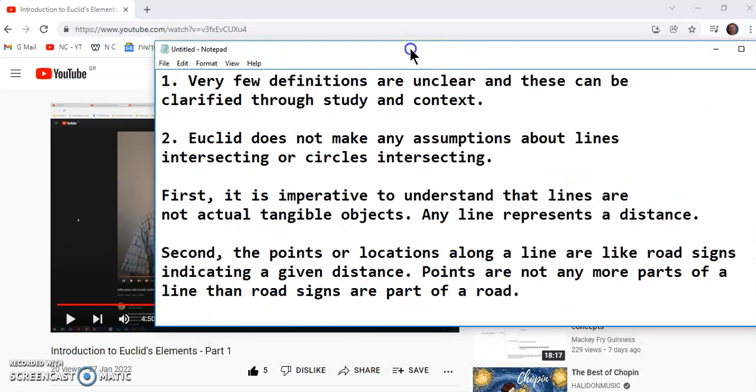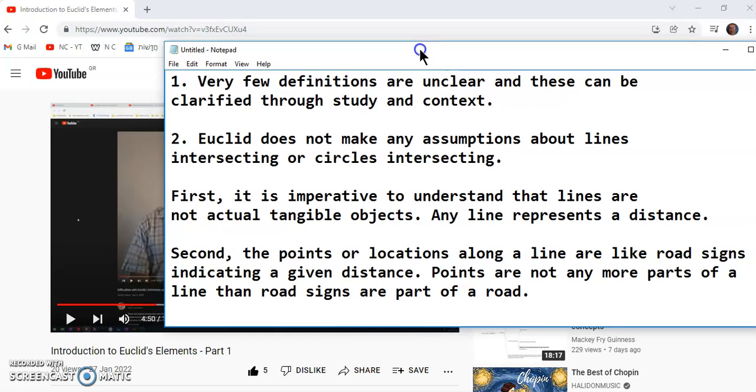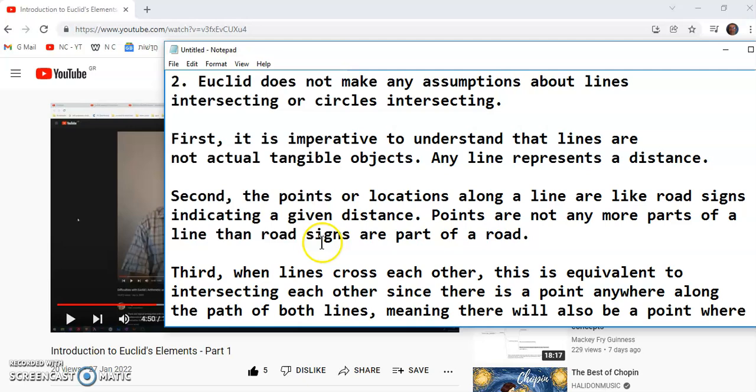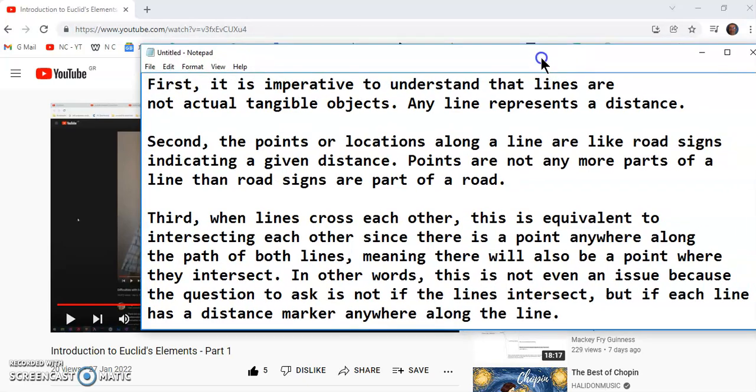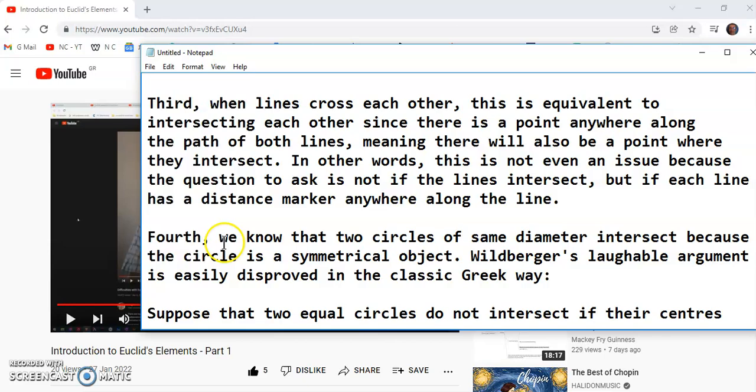So first, it is imperative to understand that lines are not actual tangible objects and any line represents a distance. Second, the points or locations along a line are like road signs or flags that indicate a given distance. Points are not any more parts of a line than road signs are part of a road.